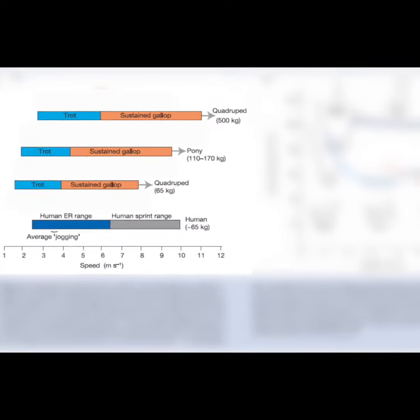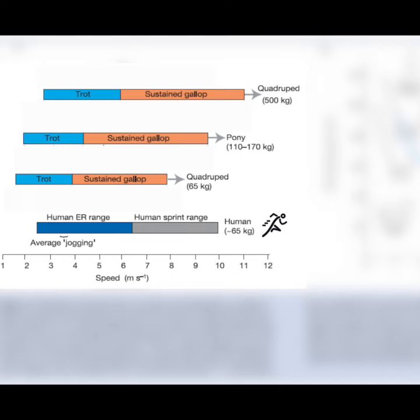The white bars in the figure on screen compare the speeds up to which humans can run marathon length distances with the trotting speeds of greyhounds, ponies, and full-sized thoroughbred horses.